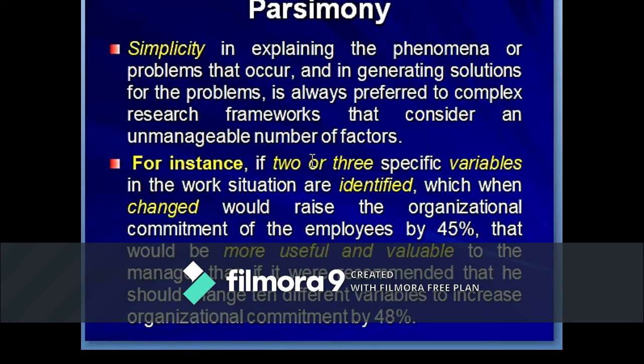The seventh hallmark is parsimony. Parsimony means simplicity in explaining phenomena or processes. For example, if two or three specific variables in the workstation are identified which, when changed, would raise organizational commitment of employees by 45%, that would be more valuable to a manager than if it were recommended to change 10 different variables. In other words, if you can get better results by using two or three variables, why go for five, seven, or ten?